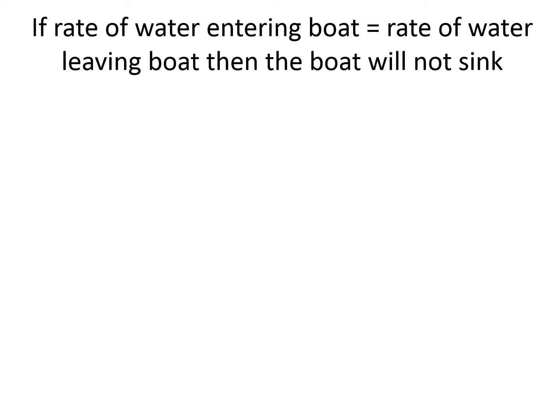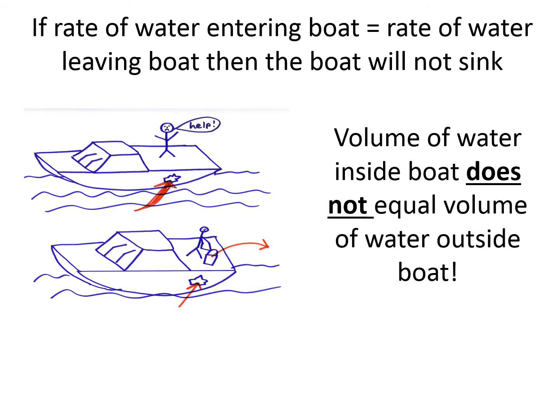If the rate of water entering a boat is equal to the rate of water leaving the boat, then the boat will not sink. So here's an example of this in a picture. You've got the water going into the boat, but the man is taking the water out of the boat with a bucket. So the volume of water inside the boat does not equal the volume of water outside of the boat. There's much more water outside of the boat because he's in the ocean. But he's at equilibrium, his boat isn't sinking because every time the water goes into his boat, he gets the water out of his boat.